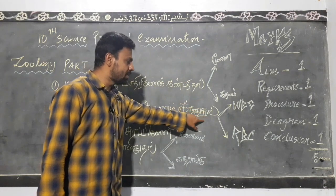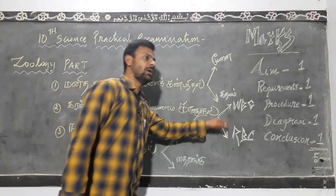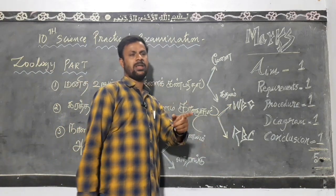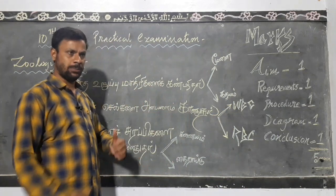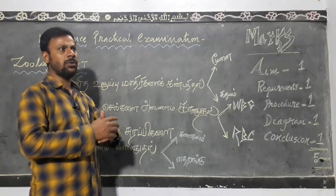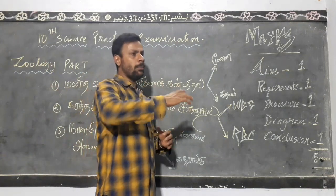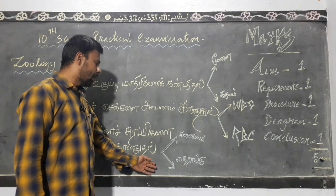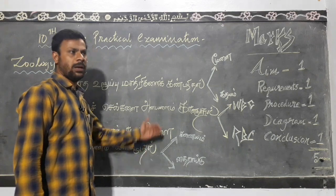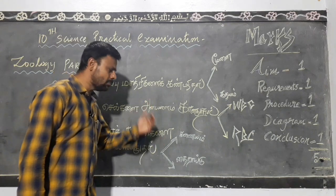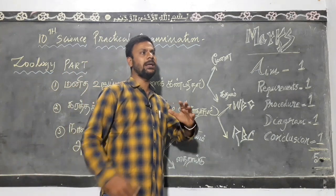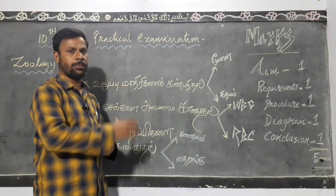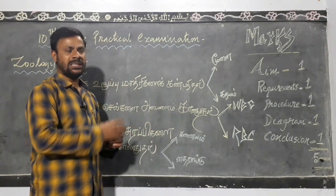Then one is WBC and RBC. There are 4,000 rupees. There are 2 rupees. We can do that.